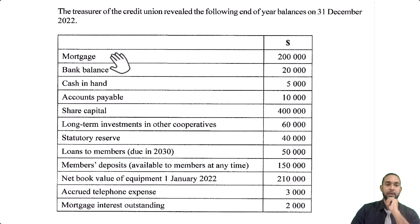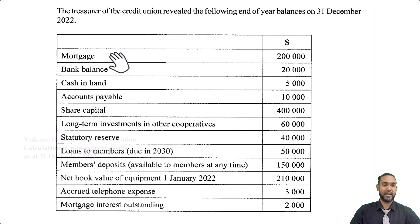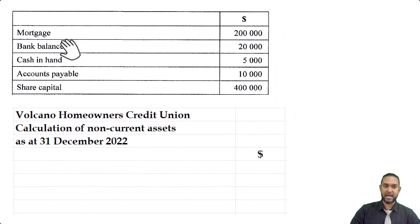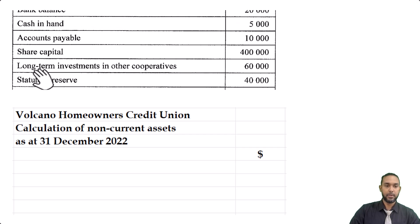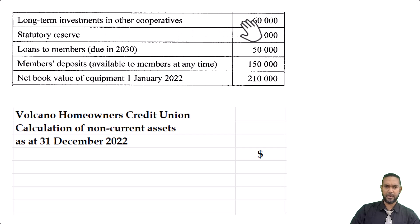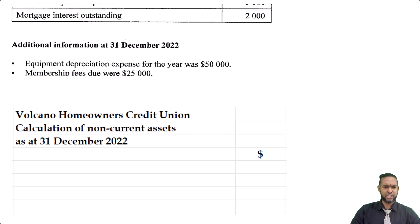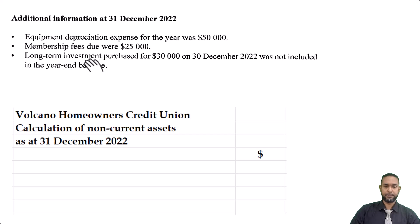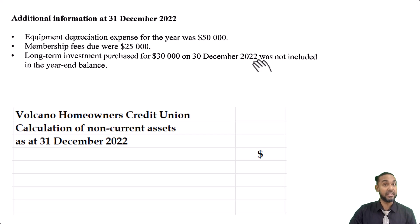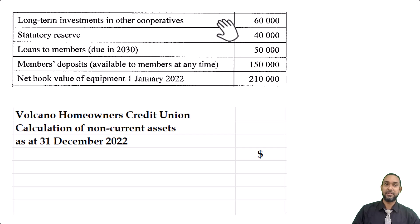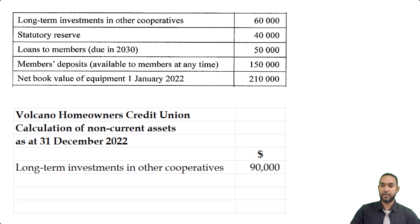Now we have to identify the non-current assets. Mortgage — no. Bank balance — no. Cash in hand — no. Accounts payable — no. Share capital — no. Long-term investments — yes, $60,000. But the additional information said there was a long-term investment purchased for $30,000 on 30th December that was not included in the year-end balance. So this $60,000 is missing $30,000 — $60,000 plus $30,000 is $90,000. We'll put that in.